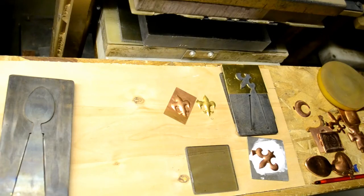This is about a process I first learned in the early 90s reading Susan Kingsley's book Hydraulic Die Forming for Jewelers and Metalsmiths. In there it's referred to as a matrix and blanking die set.